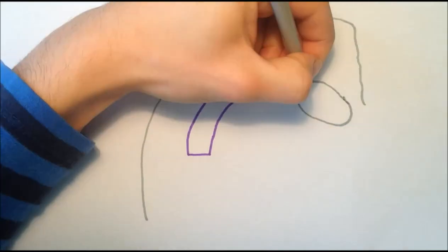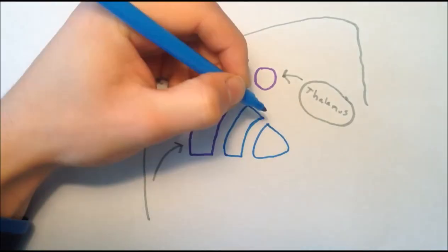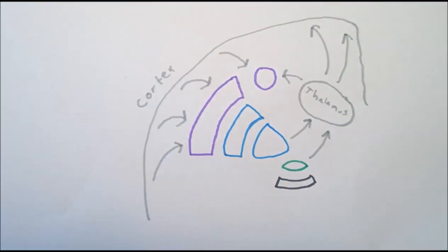The input unit of the basal ganglia is the striatum, which receives innervation from virtually the entire cerebral cortex, the thalamus and the limbic system. The output units are the substantia nigra pars reticularis and the internal globus pallidus, which send projections to the thalamus, which in turn projects back to the cortex, forming a loop.